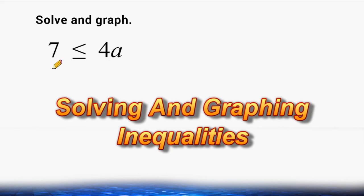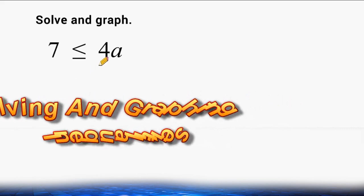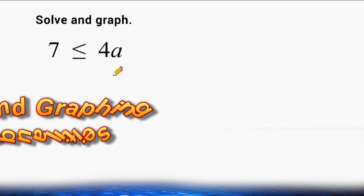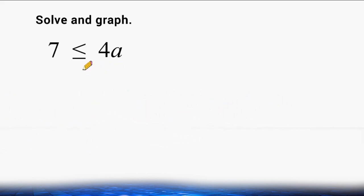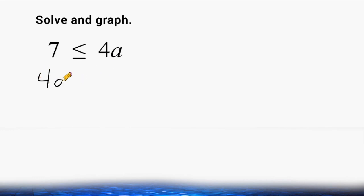This inequality reads that 7 is less than or equal to the product of 4a. Notice that the variable a is on the right-hand side of our inequality, and you are probably more used to seeing that on the left-hand side. So what you can do if you feel more comfortable is to take this value on the left and this value on the right and switch them around. However, you should note that if you decide to do that, you have to take your inequality symbol and reverse the order.